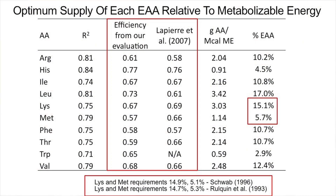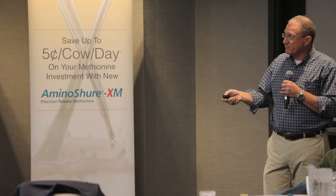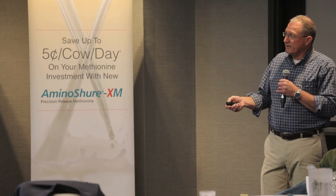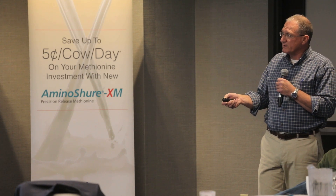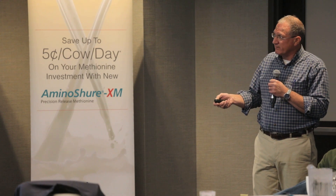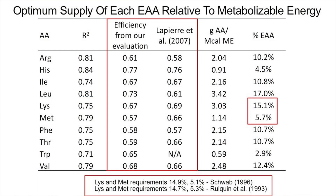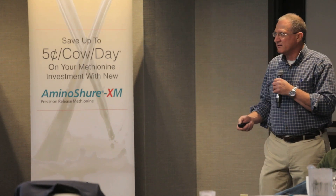We get 1.14 grams of methionine per Mcal of ME, and 3.03 grams of lysine per Mcal of ME. On an essential amino acid basis: 5.7 and 15.1. We show that simply because when you go back to the data from Schwab and Rulquin — Schwab was 14.9 and 5.1, Rulquin was 14.7 and 5.3 for lysine and methionine as percent of EAA. So even though the absolute numbers are different, they're going the same direction, giving us some comfort that this approach isn't that far off.